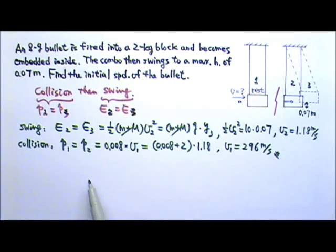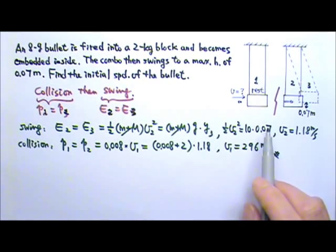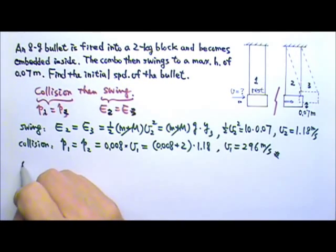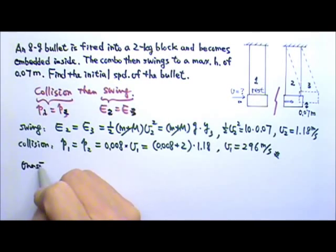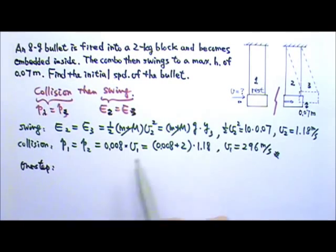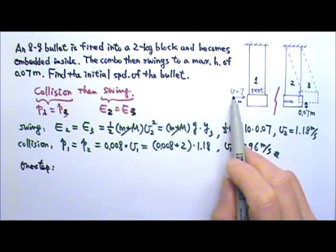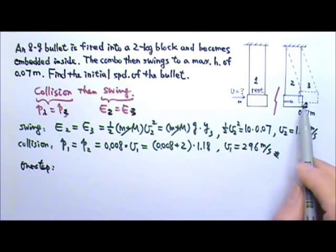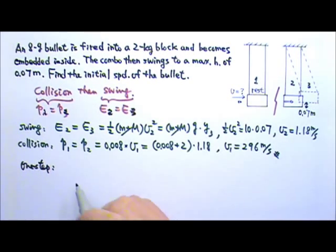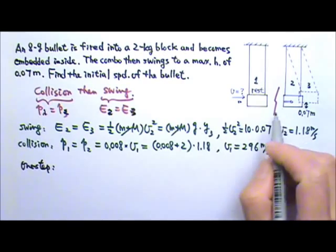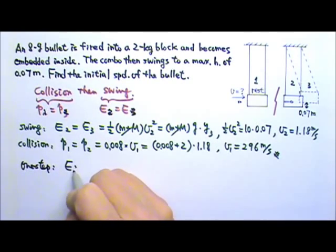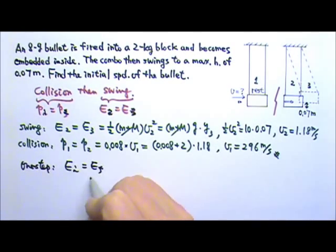When we do this problem in class, I often have some students who would treat this problem as a one-step problem. So initially, we have a bullet with the kinetic energy. At the end, the bullet and the block combo is up high. So we can use conservation of energy. It goes all the way from the very beginning to the very end.